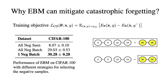Why can the energy-based model mitigate catastrophic forgetting? Here we compare the proposed contrastive divergence training objective with two baselines. The first baseline, 'all negative same,' means the negative classes are all classes seen so far. The second, 'all negative batch,' means the negative classes are all classes in the current batch. Our proposed objective, 'one negative batch,' samples only one single negative class from the current batch, and we find that it achieves the best results.